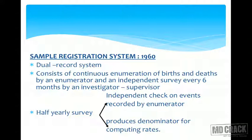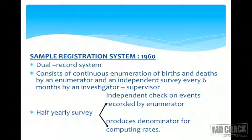The next method is the Sample Registration Survey. It is a dual record system consisting of a continuous enumeration of births and deaths by an enumerator — recording births as they occur — and an independent survey carried out every six months by an investigator. This is a dual-check system: a continuous record and an intermittent record are matched, and if data is missing in either, it can be identified.